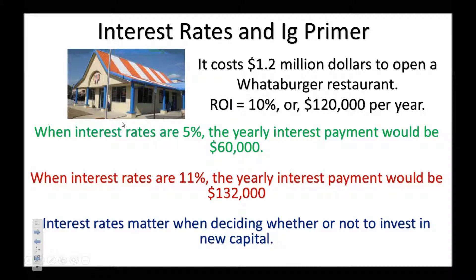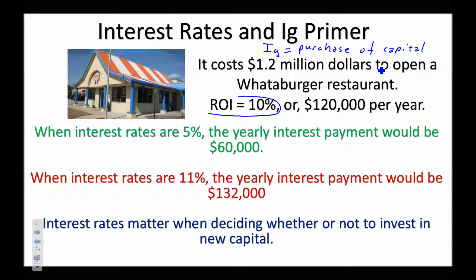To understand crowding out, we need to review how interest rates affect investment. Investment is the purchase of capital — it's not stocks, bonds, or saving money; it's spending money so that you can make money. For example, it costs $1.2 million dollars to open a Whataburger restaurant. Let's assume your return on investment will be 10%, meaning a profit of $120,000 per year.